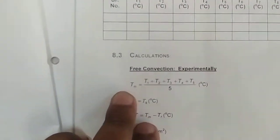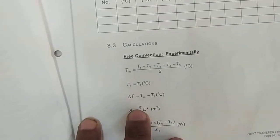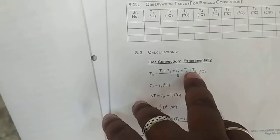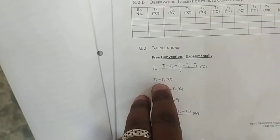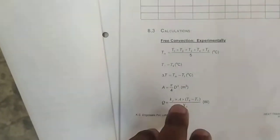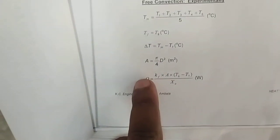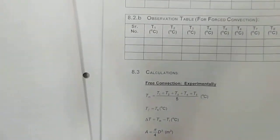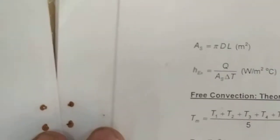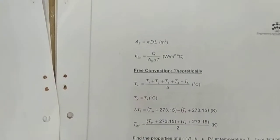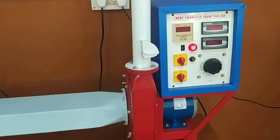After taking the readings you can do the calculations. Tm is the average thermocouple reading of the pin fin apparatus — we take readings from thermocouples 1 to 5 — and the ambient temperature is T8, where thermocouple number 8 gives us the ambient temperature. So delta T will be Tm minus Tf. Since the diameter of the pin fin is given, we can find out the area, then using the formula we can find out what is the heat supplied, and from that we can find out the heat transfer coefficient. Similarly, we can do the same calculation for forced convection.